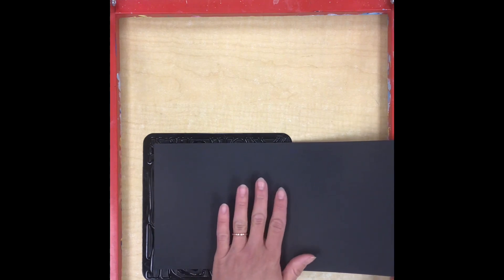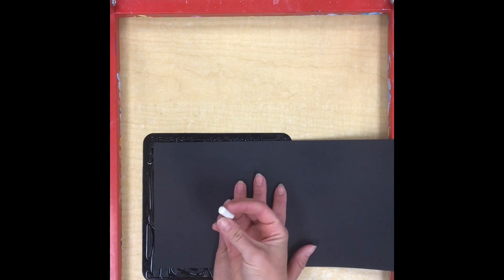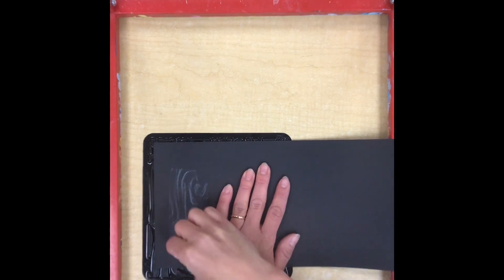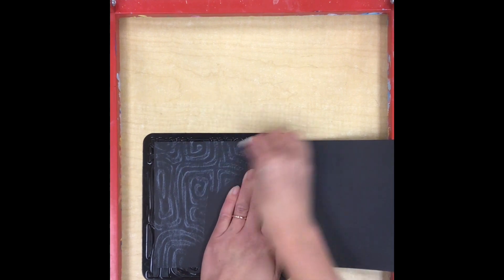Next I'm going to do a texture rubbing on a smaller black piece of paper. This is going to be the tabletop that our flowers are sitting on. To make sure the texture shows up, this time I'm going to use a white crayon and do the same thing with a different texture.